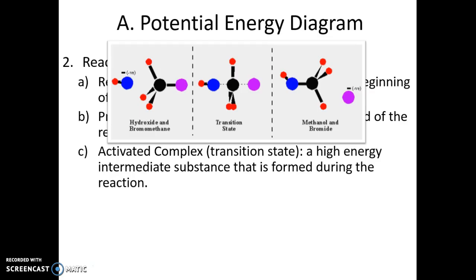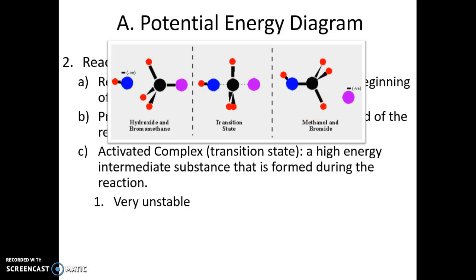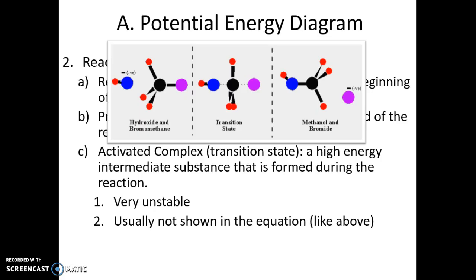Here's another example: hydrogen and bromomethane coming together. When they are connected — everything smashed together — is the transition state, and then it forms methanol and bromide. The activated complex is very unstable and usually not shown in an equation because it only lasts for a short amount of time.